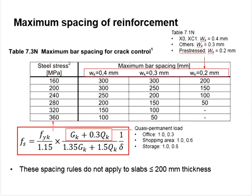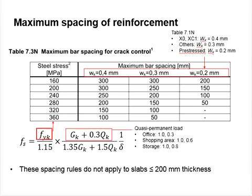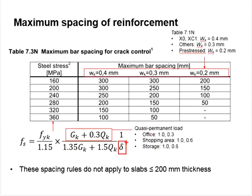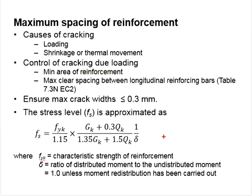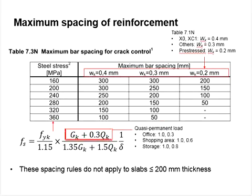In the equations, FYK refers to the nominal yield strength of the bar — that means the grade of the bar. 1.15 is the factor of safety for the reinforcement bar, and 1.35 and 1.5 refer to the ultimate limit state load conditions. This data refers to the distribution factors — the ratio of moment distributions. In normal circumstances we always use a ratio of 1.0, so you don't need to worry about it.